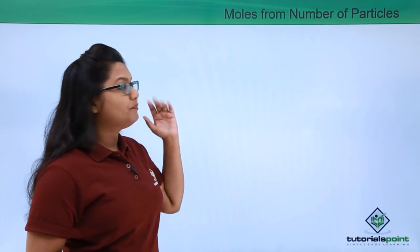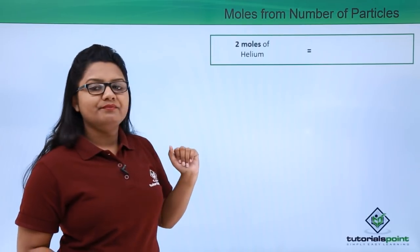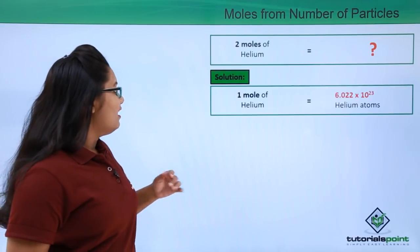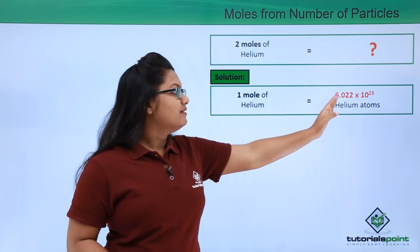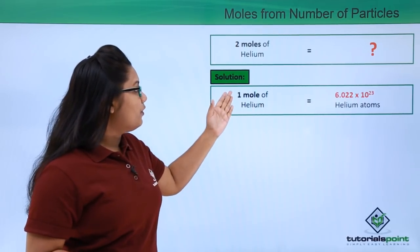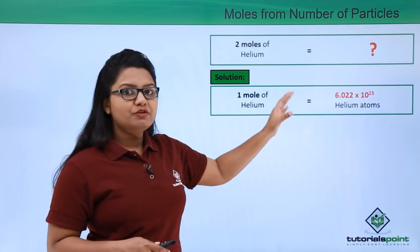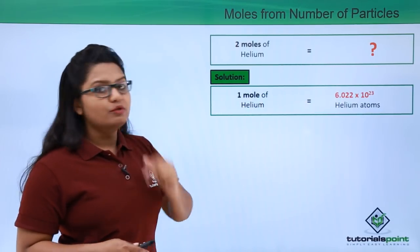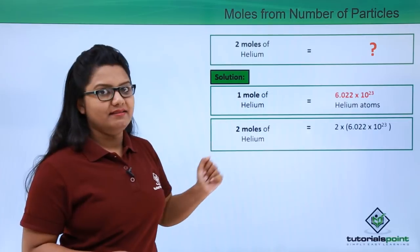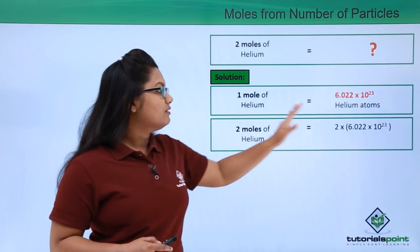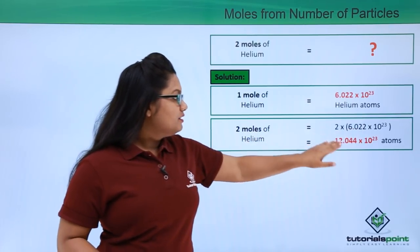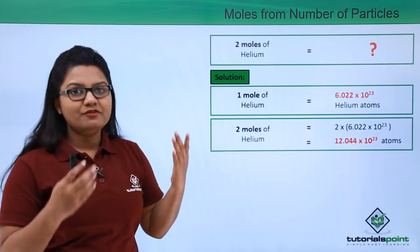Now let's solve a problem. Suppose we have two moles of helium — how many helium atoms does it contain? We know one mole of helium has 6.022 × 10²³ helium atoms, the Avogadro number. For two moles of helium, we multiply two by Avogadro's number: 2 × 6.022 × 10²³ = 12.044 × 10²³ atoms of helium.